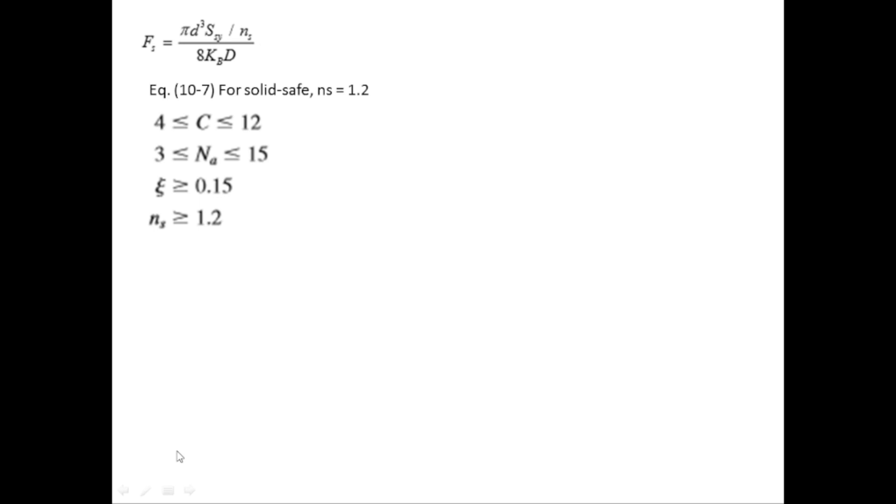So put the wire diameter to be 0.08 and SSY is equal to 101.8 times 10 to the power 3 and NS is equal to 1.2 and KB is equal to 1.135 and mean coil diameter is equal to 0.8.